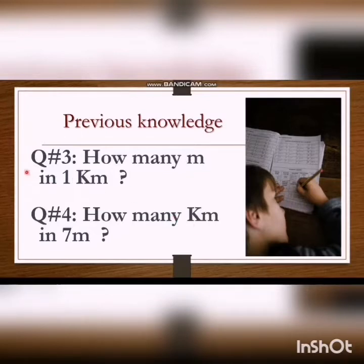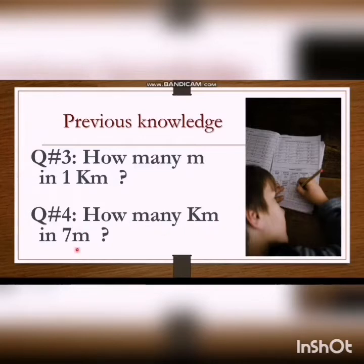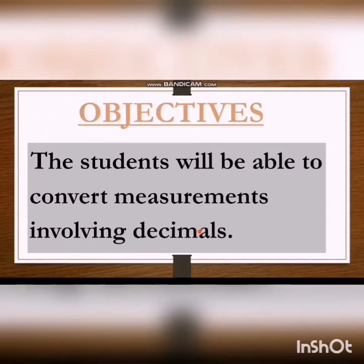Question number 3: How many meters in 1 kilometer? We learned in our previous week that there are 1000 meters in 1 kilometer. Question number 4: How many kilometers in 7 meters? This is the reverse of question number 3. We convert smaller value to greater value. When we divide 7 by 1000, we get 0.07 kilometers.